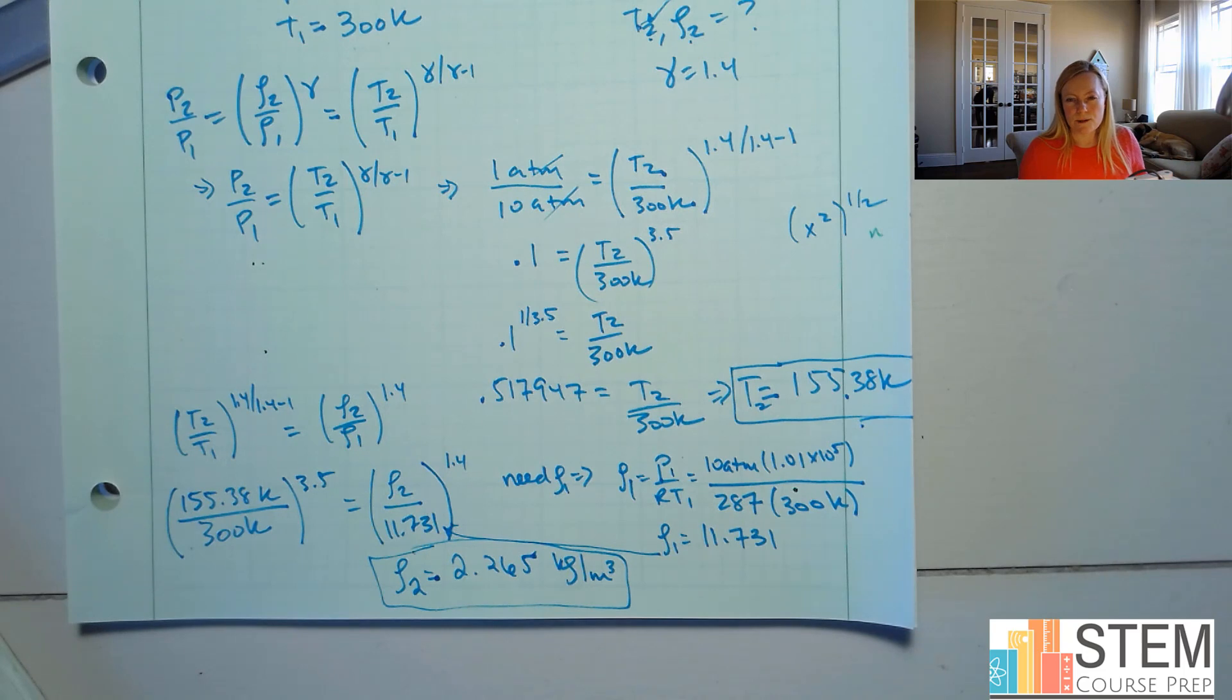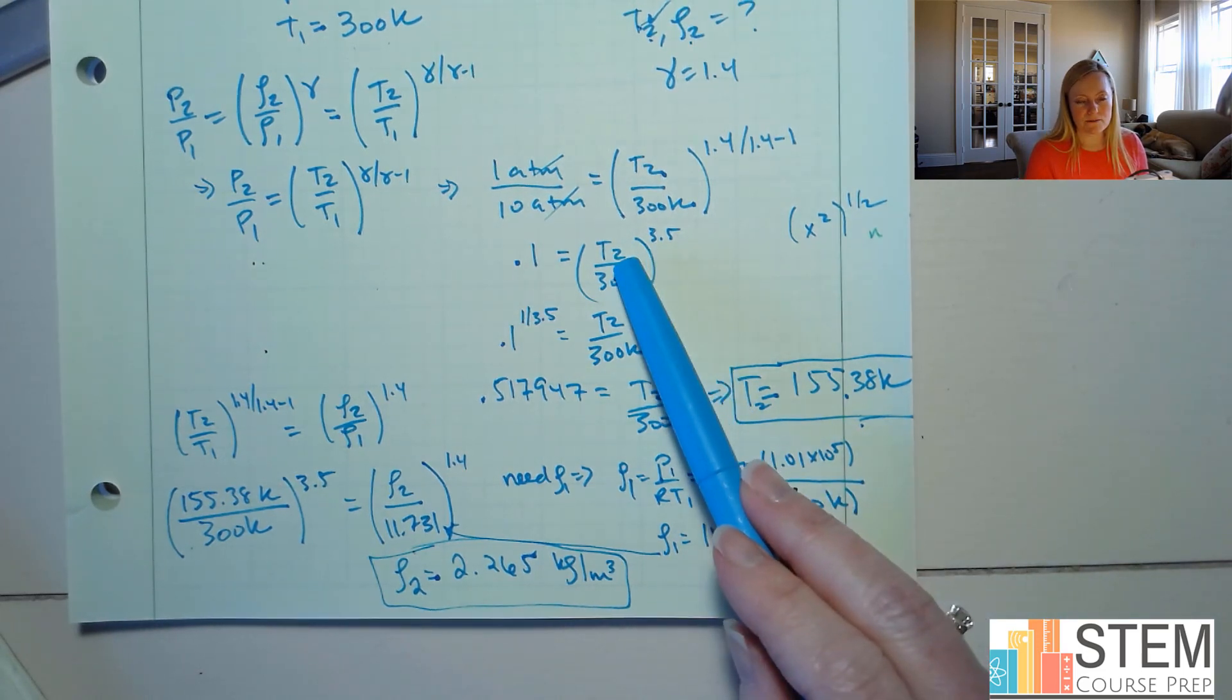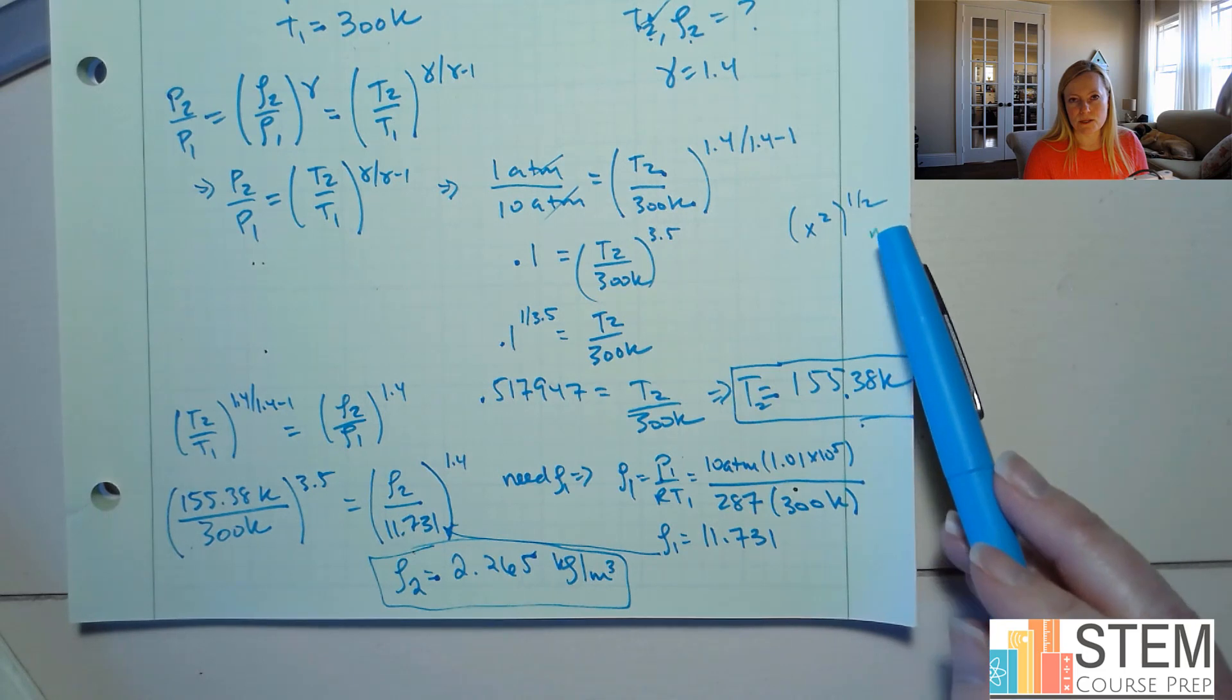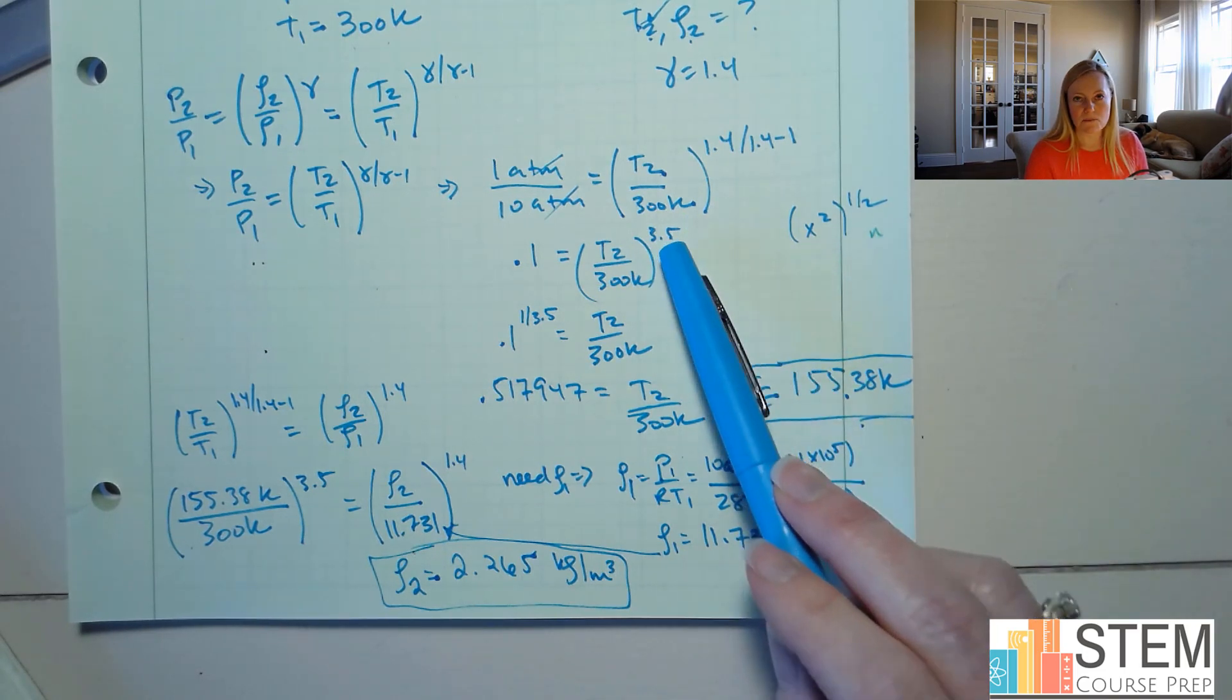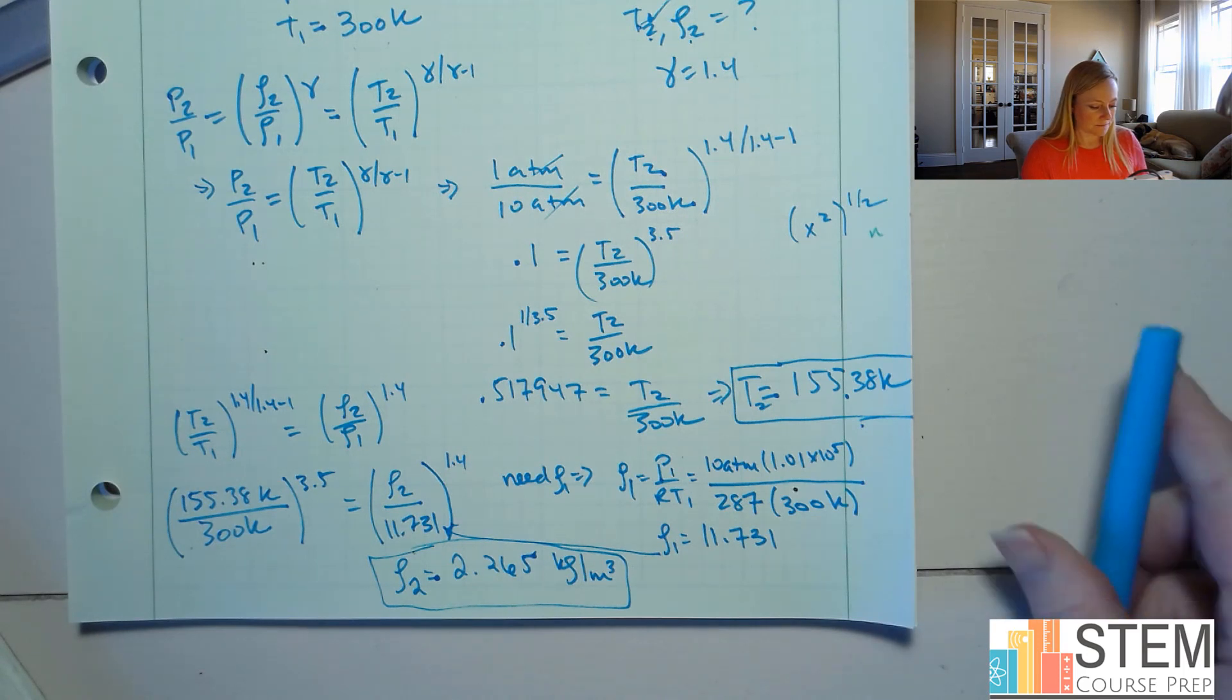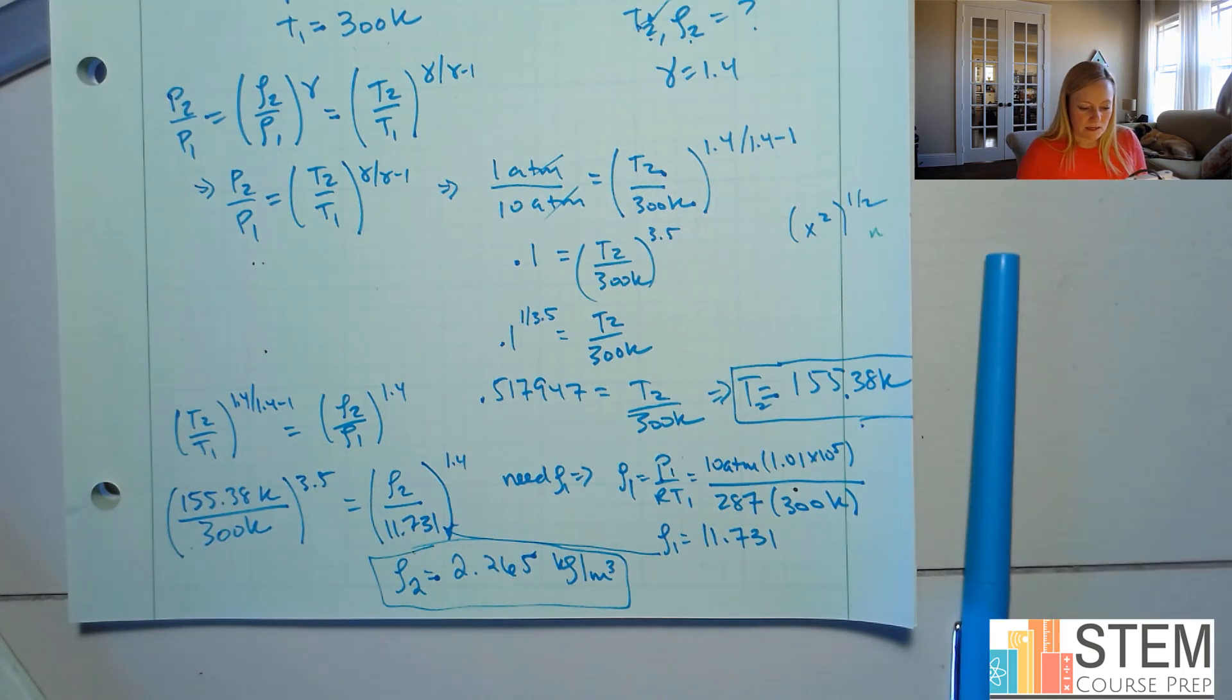Okay. So pretty straightforward, you're just relating the two points to each other using these equations right here. All right. The thing most people get tripped up on is doing this exponent when you have an unknown in here. For some reason, it throws people off. But just remember, think of the square root. Square root is an exponent of 1 over 2, so it's going to be the same thing here. You're just going to have 1 over 3.5.